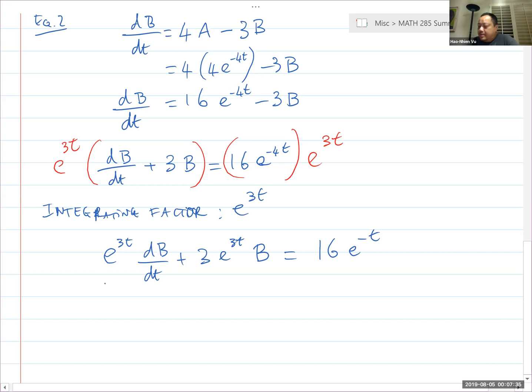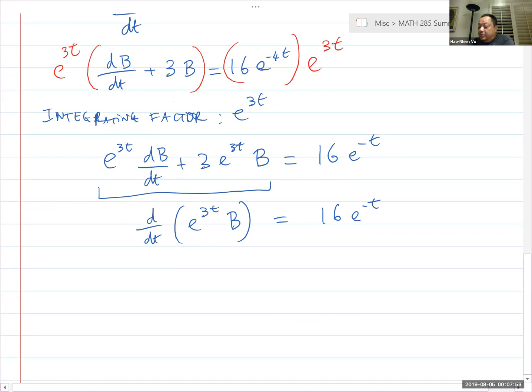Okay. This one looks like the product rule. It looks like the derivative of e^(3t) times B. So I'm going to take the integral both sides. End up with e^(3t) times B is equal to the integral of this is negative 16e^(-4t) plus a constant C_2.